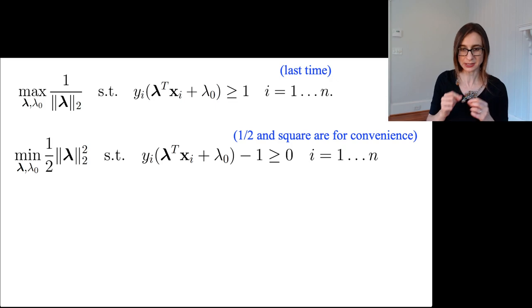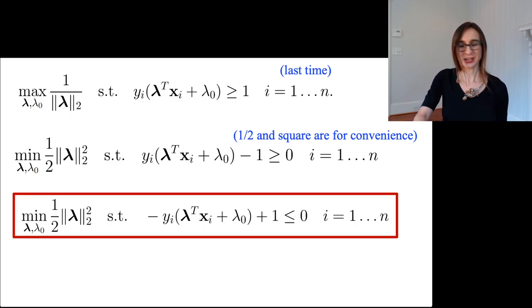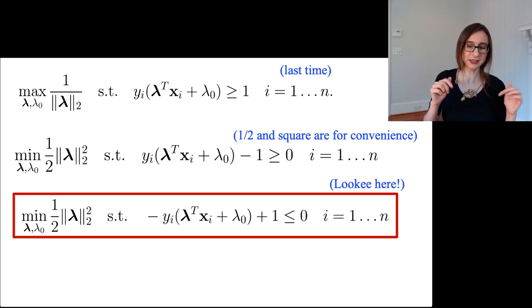Why is that? Maximizing one over something is the same as minimizing that same thing. The squared and the norm, the one half and the squared don't actually influence the solution to the problem. If you minimize the norm, that gives you the same thing as minimizing the norm squared. The one half in front doesn't impact the solution - it's just for convenience because we're going to be taking derivatives.